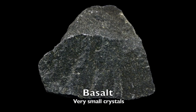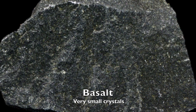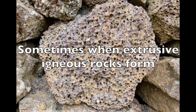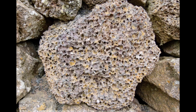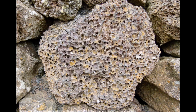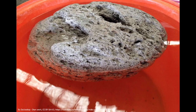For example, this piece of basalt has very tiny crystals — you might even need a magnifying glass to see them. This piece of obsidian, which is also called volcanic glass, has almost no crystals. Sometimes when extrusive igneous rocks form, air gets trapped inside them and bubbles form. This is an extrusive igneous rock called pumice. It has lots of tiny air bubbles in it, and because of all the air bubbles, this rock can actually float in water.